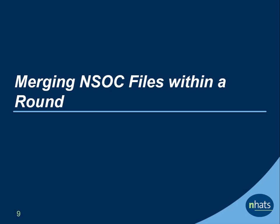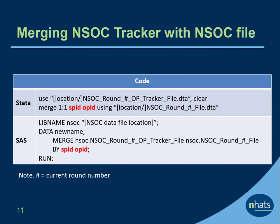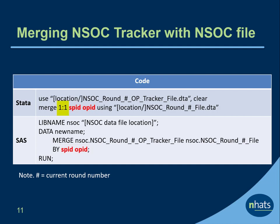Next, let's take a look at an example of how to merge NSOC files within a round. Suppose you want to merge the NSOC OP tracker file into the NSOC file in order to look at non-response to NSOC. Because there is one record for each caregiver in the NSOC OP tracker file, you would use both SPID and OPID in a 1-to-1 merge. Here we show Stata and SAS code for merging an NSOC OP tracker file with an NSOC file. The ID variables SPID and OPID are used for merging, and it is a 1-to-1 merge in Stata.